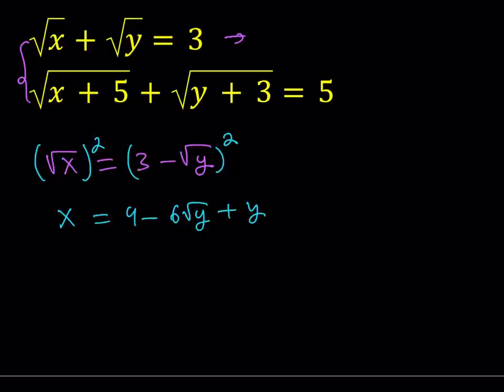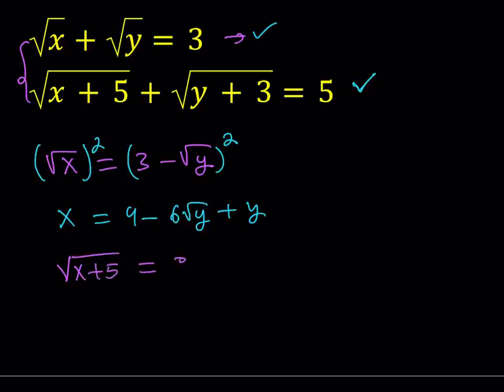Now let's leave it at that and then see what we can do with the second equation. I'm going to be doing something similar — let's go ahead and isolate the square root of x plus 5. The square root of x plus 5, and I'm going to write it as 5 minus the square root of y plus 3.